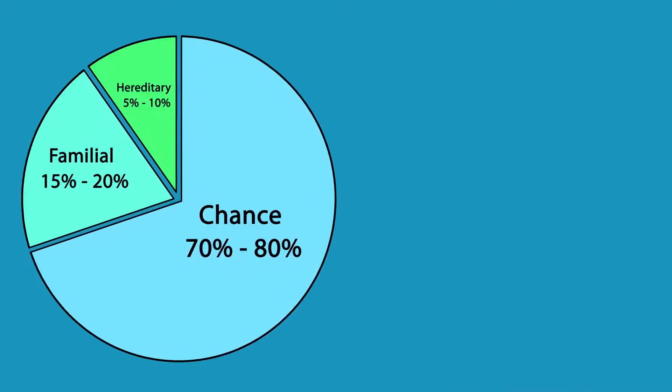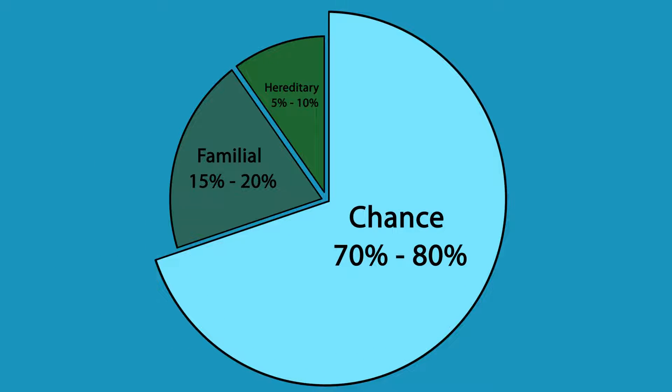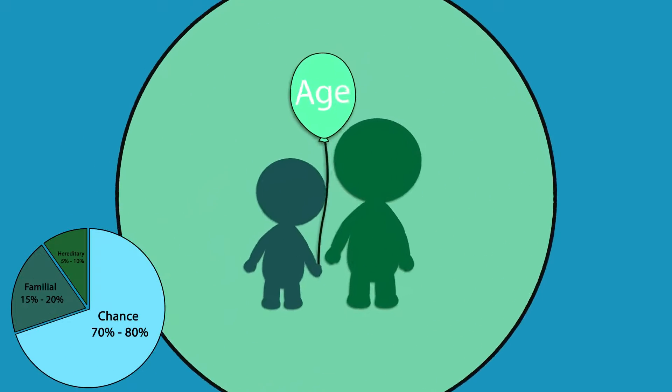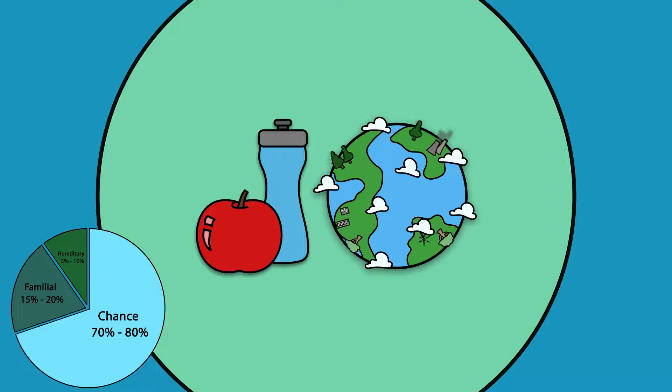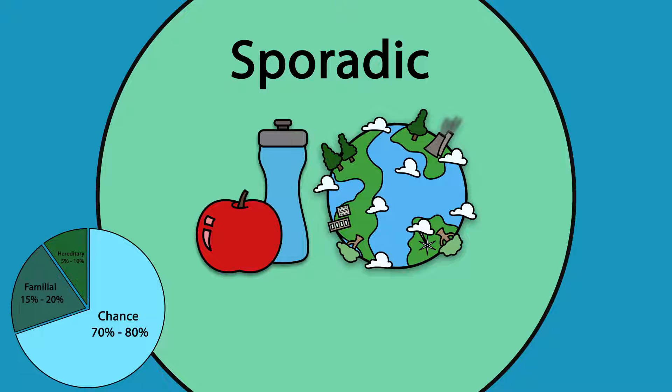70 to 80% of cancers happen by chance. These cancers are caused by things like age, lifestyle, and environment, and are called sporadic cancer.